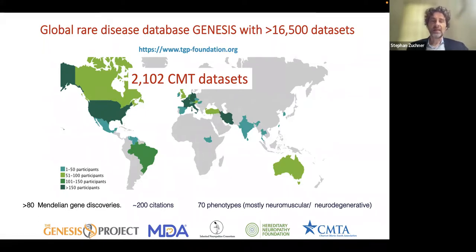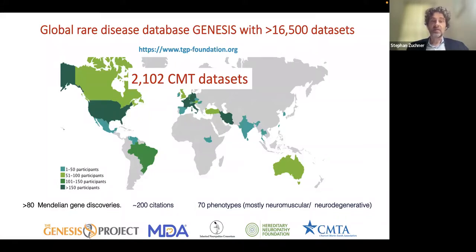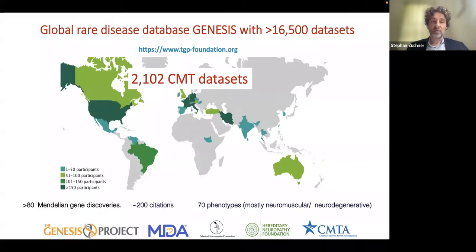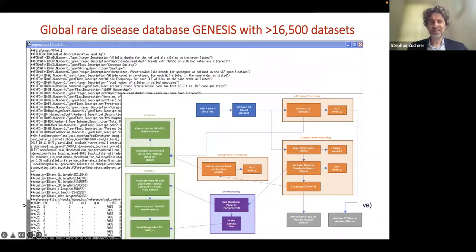There are many more data sets in the GENESIS database from diseases related to CMT, such as spastic paraplegias and ataxias, and comparing CMT patients to those with related disorders can also help. We're very happy for CMTA support over a number of years because this work is quite expensive — data need to be stored, analyzed, and archived. It's also very international; it's important to compare data sets from different countries and ancestries, and data are shared amongst researchers in those countries.